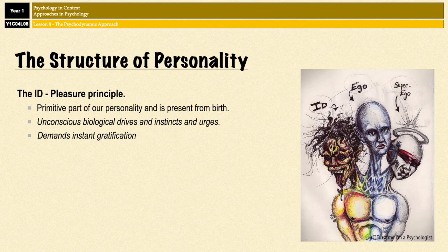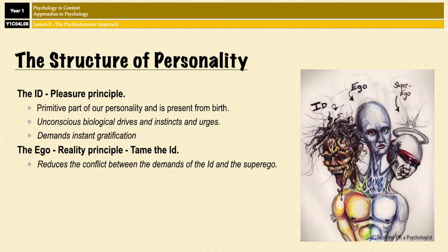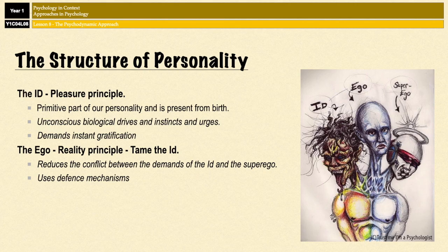The second part to develop, at around the age of two, is the ego. The ego works on the reality principle, and it strives to satisfy the id's desires in a realistic and socially appropriate way. It weighs up the costs and benefits of an action before deciding to act upon or abandon the impulse. It also acts as a mediator between the other two parts of personality, attempting to reduce the conflict between the demands of the id and the demands of the superego, and it does that by employing what's known as defense mechanisms.